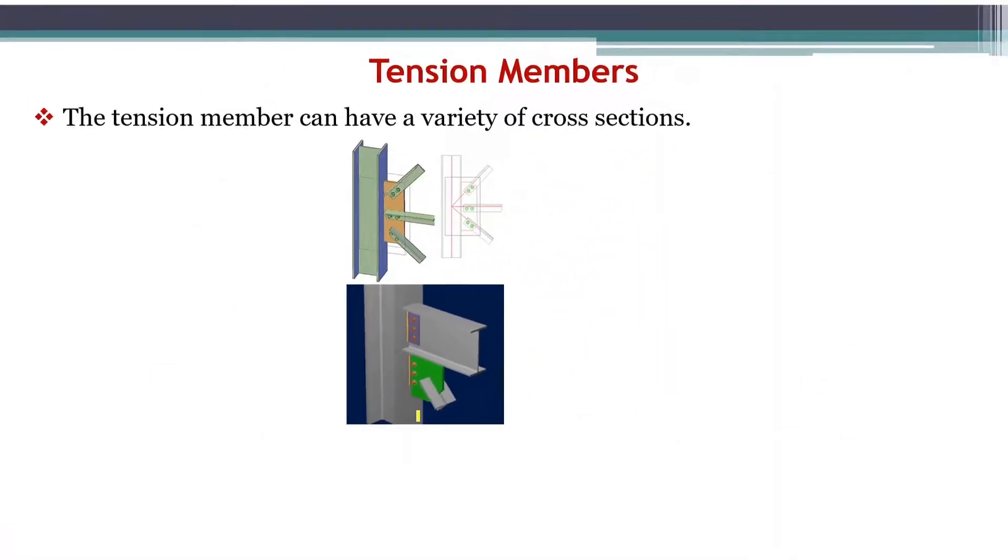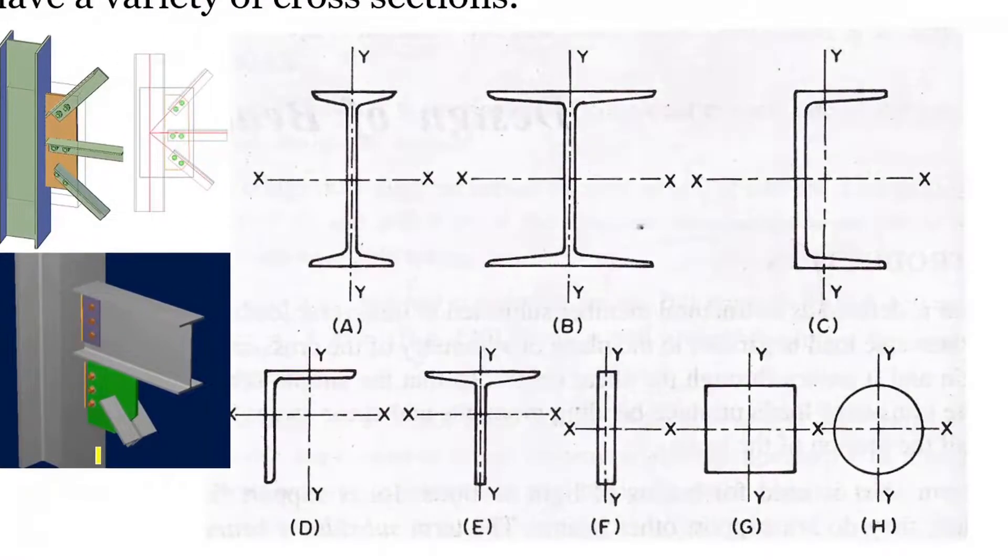We use various cross sections for tension members: I section, heavy I section, channel section, angle section, T section, plate section, solid plate, and circular solid plate. You can see here this is the connection. There are three members connected to the column at a single point using a gusset plate. The three tension members are all angle sections.